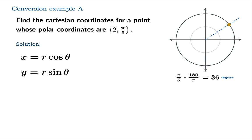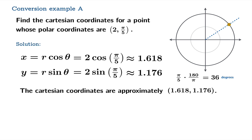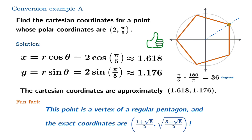The formulas are quite easy. x equals r cosine theta, y equals r sine theta, and just plugging in that data, we find that the coordinates are approximately 1.6 comma 1.2. If we superimpose the Cartesian grid, you can see that these seem reasonable. By the way, a fun fact, this point is a vertex of a regular pentagon, and the exact coordinates happen to be (1 plus root 5 over 2, square root of 5 minus root 5 over 2).